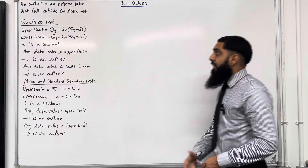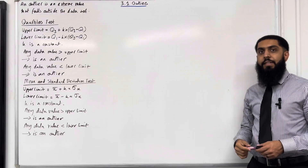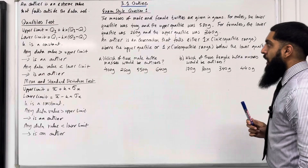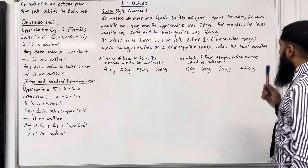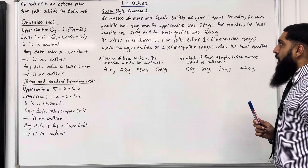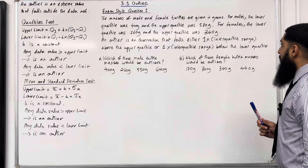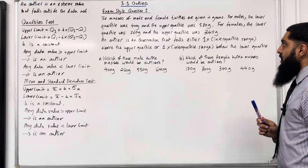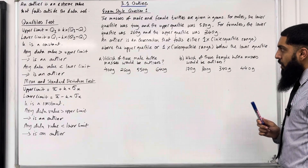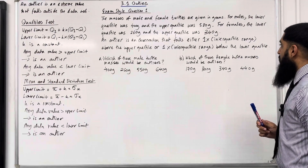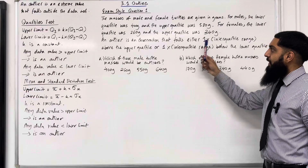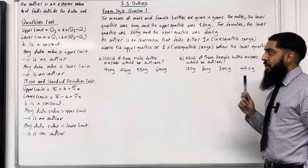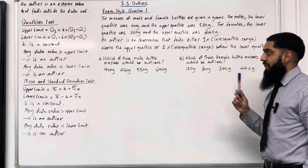So those are the key facts of 3.1 outliers. I'll be applying these key facts within exam style questions. Let's have a look at exam style question 1. The masses of male and female turtles are given in grams. For males, the lower quartile was 400 grams and the upper quartile was 580 grams. For females, the lower quartile was 260 grams and the upper quartile was 340 grams. An outlier is an observation that falls either 1 times the interquartile range above the upper quartile or 1 times the interquartile range below the lower quartile. So in this question the k value is 1. Which of these male turtle masses would be outliers: 400 grams, 260 grams, 550 grams, and 640 grams?